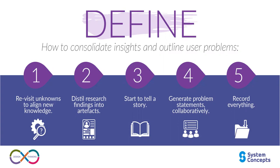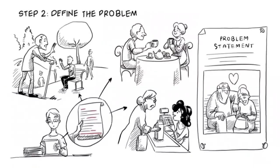The next step is the defining stage — framing the problem. After understanding the users, the next step is to define the problem you want to solve. Based on the insights gained during the empathy phase, clearly define the problem statement. It should be focused, human-centric, and specific enough to guide your design process effectively. The defined stage is the second step in the design process, where designers synthesize and define the core problem they want to address.